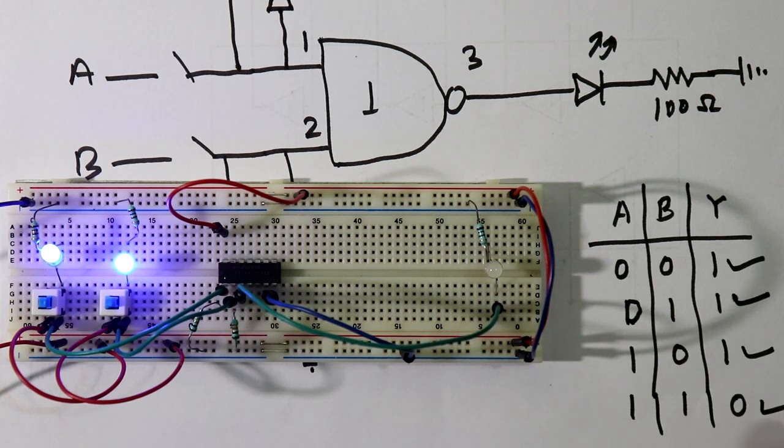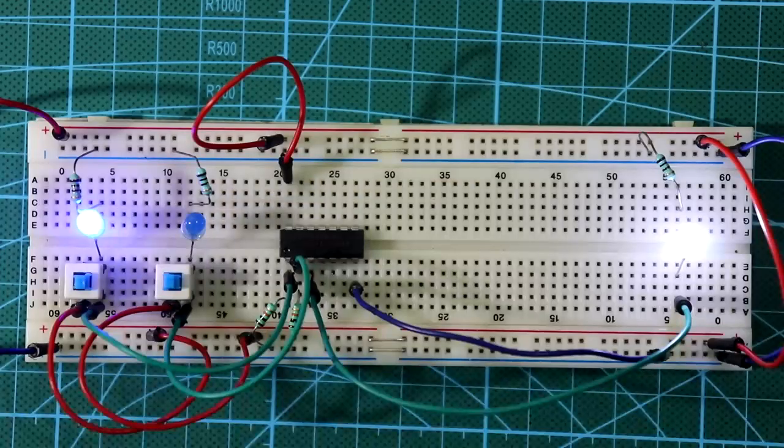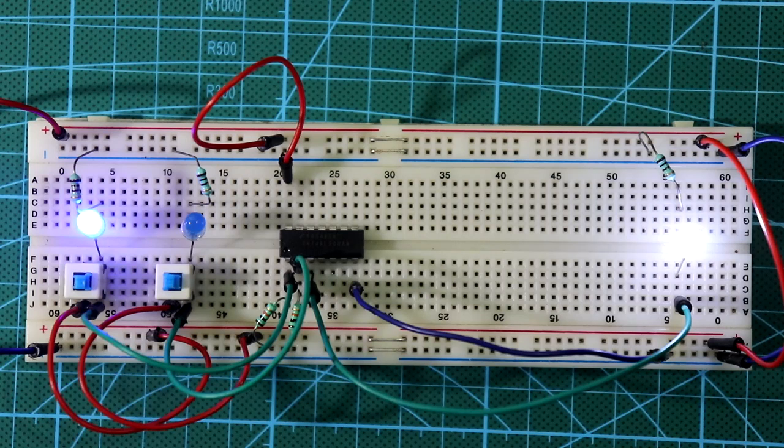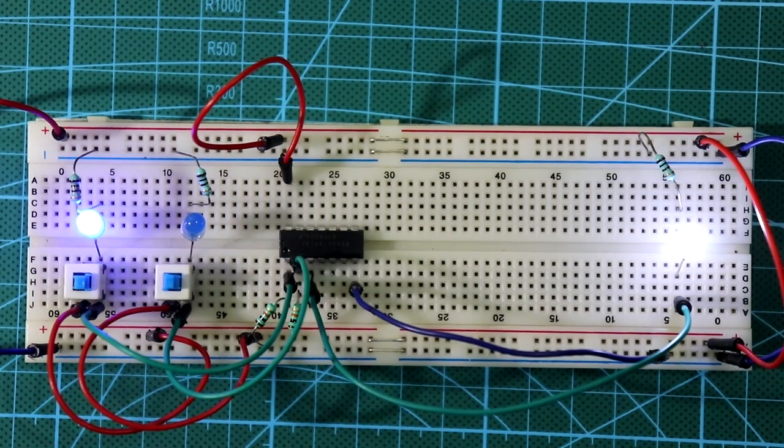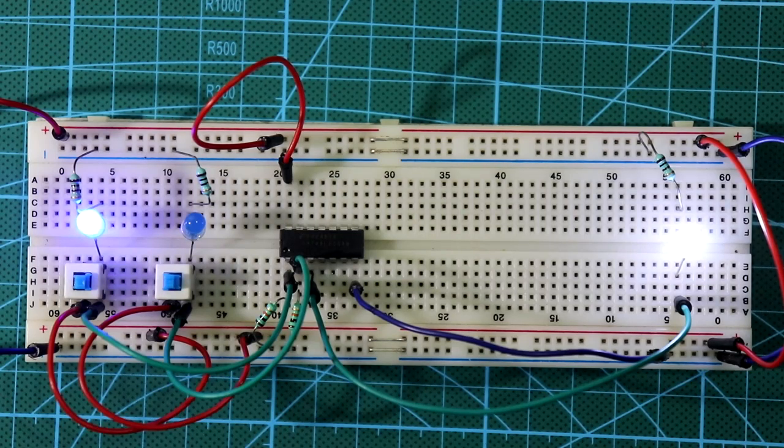So this is how we can use the NAND gate IC 7400. I hope you like this video. If so, then please like, share, and subscribe to my channel. And if you have any doubt on this, then please let me know in the comment section. In the next video I'll show you how to construct NOR gate only with transistors. Till then stay happy, and I'll see you in the next video. Thanks for watching.